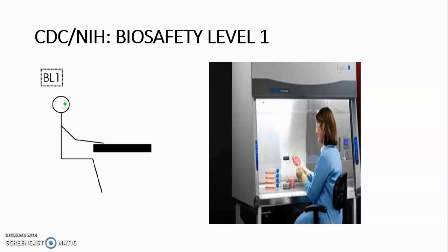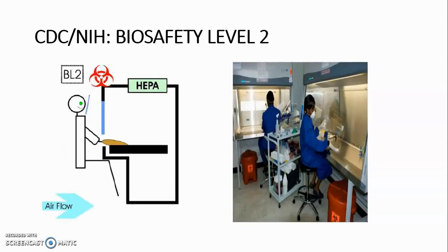Biosafety level 2 contains agents associated with human disease — microorganisms of moderate potential hazard transmitted by contact, ingestion, or puncture. BSL-2 is generally required for any human-derived blood, bodily fluids, or tissues in which the infectious agent may be unknown. Agents include measles virus, Salmonella species, pathogenic Toxoplasma, Clostridium, and hepatitis B virus.